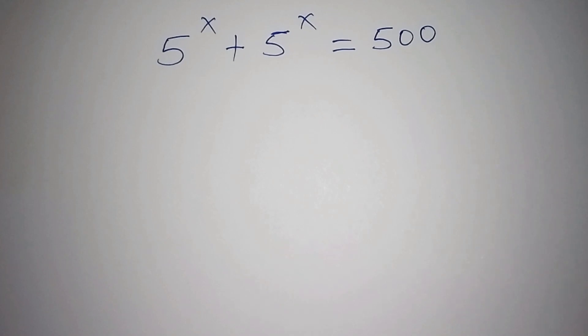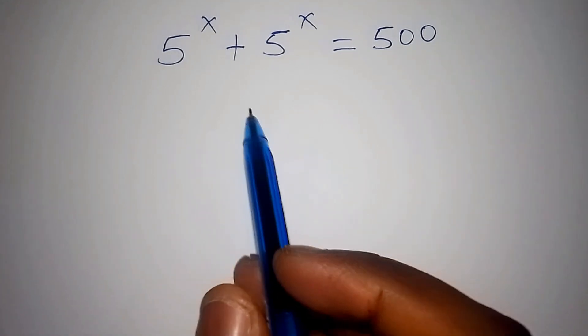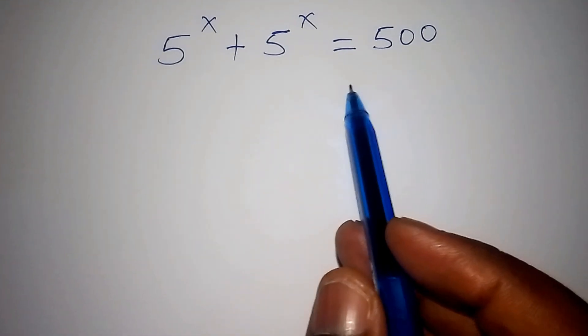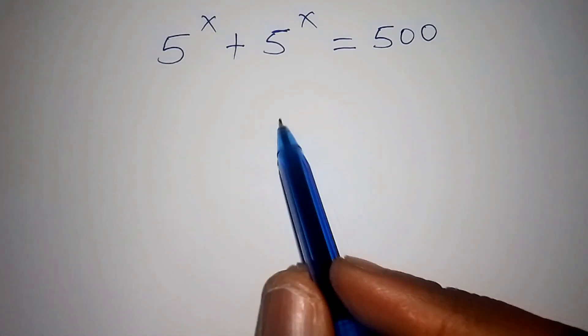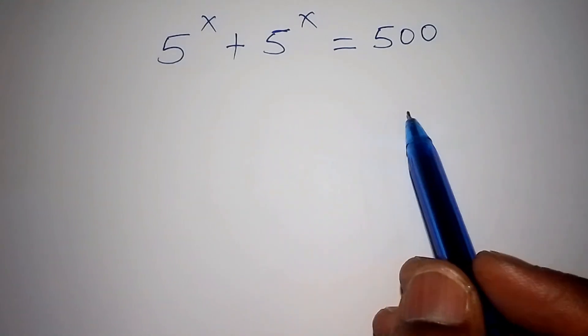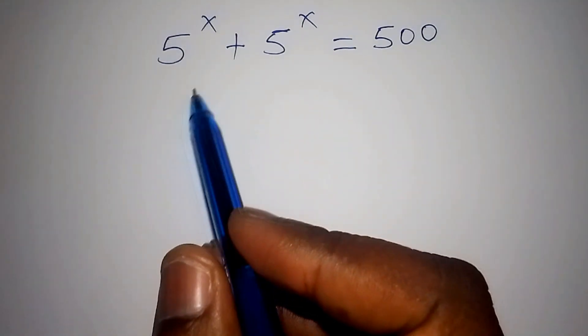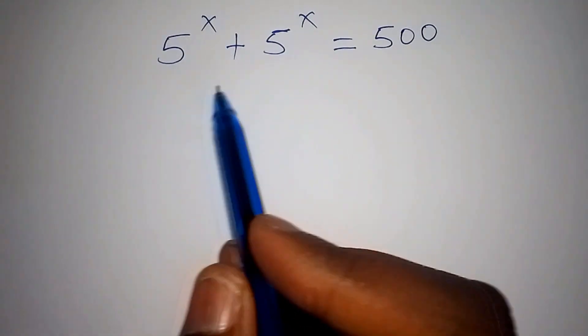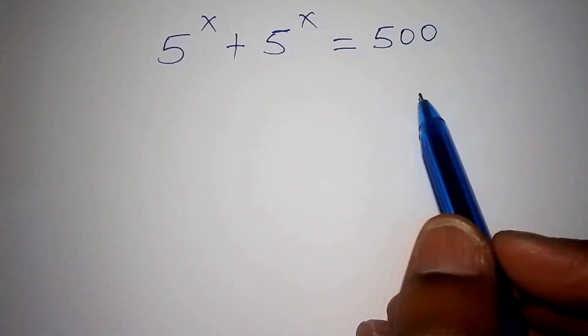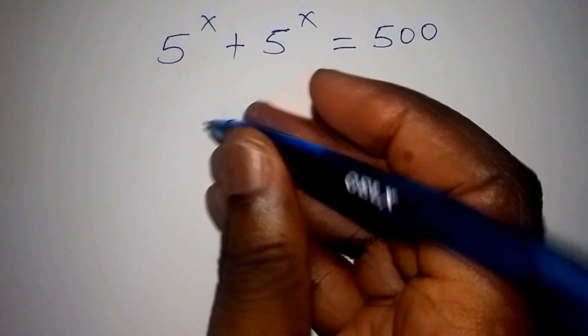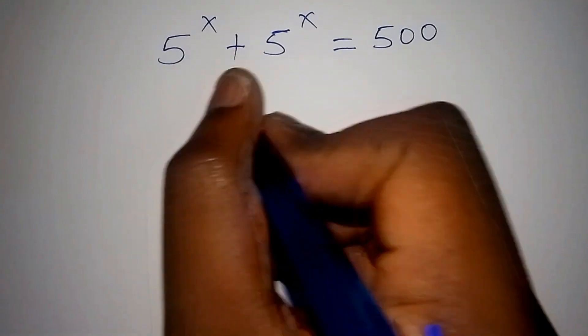Hello viewers, welcome as we work out this math problem within the shortest time possible. Make sure you watch this video up to the end. We have 5 to the power of x plus 5 to the power of x equals 500. Let's begin with the solution.